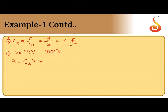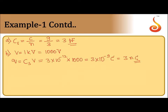Each capacitor has the same charge as the combination, so Q equals three picofarad — three into ten to the power minus twelve — multiplied by one thousand, which gives three into ten to the power minus nine coulomb. That is three nanocoulomb. So the charge on each capacitor is three nanocoulomb.